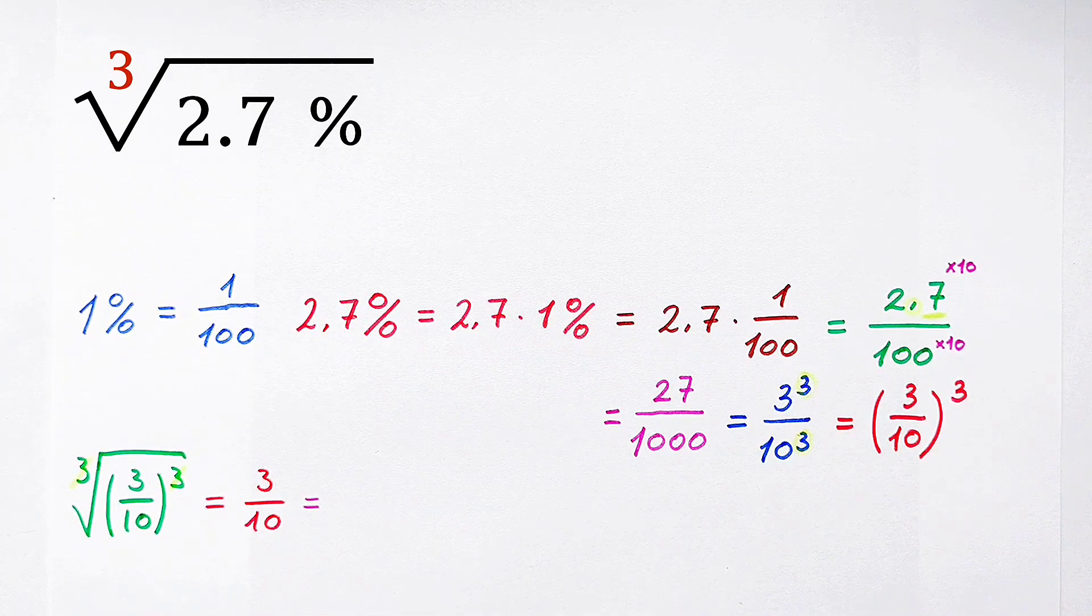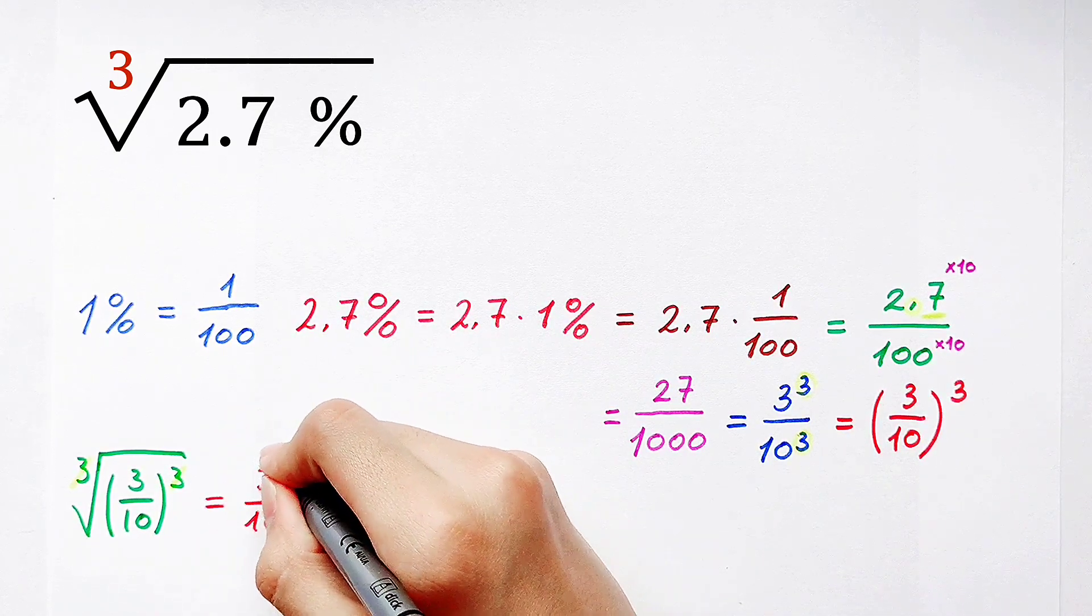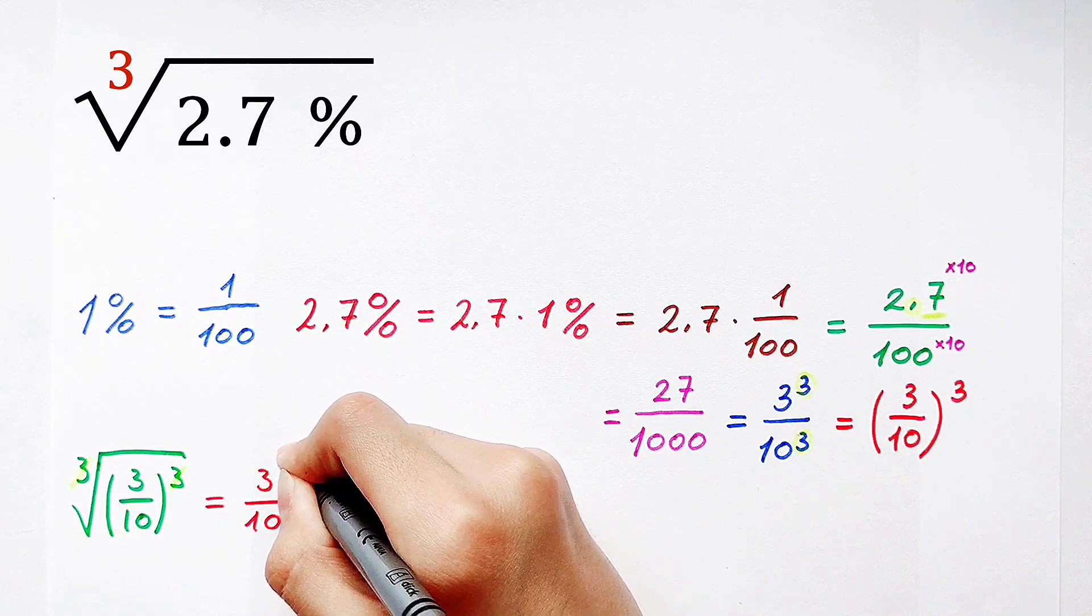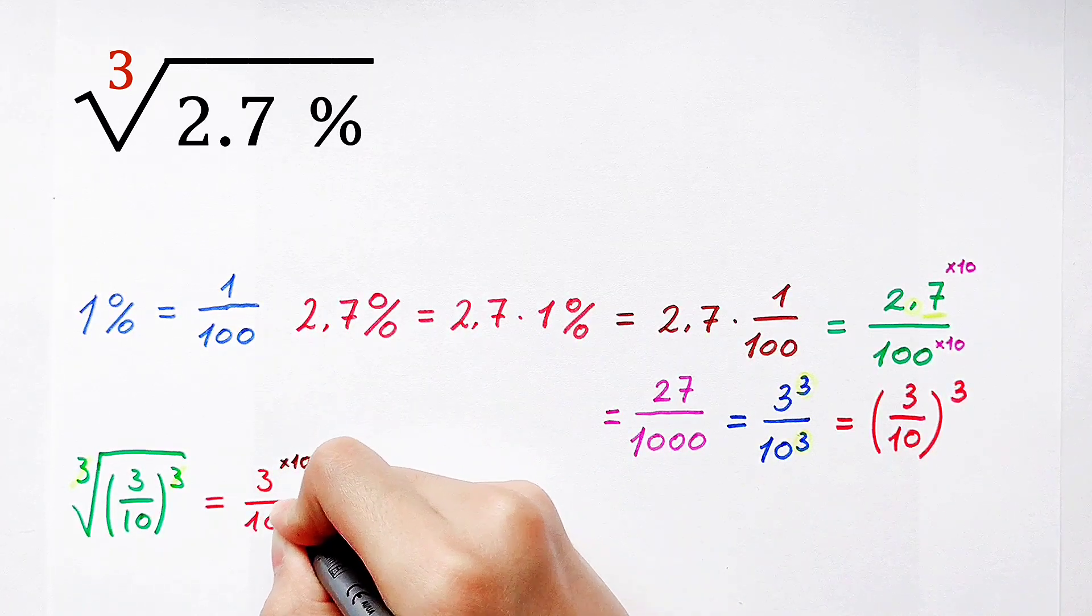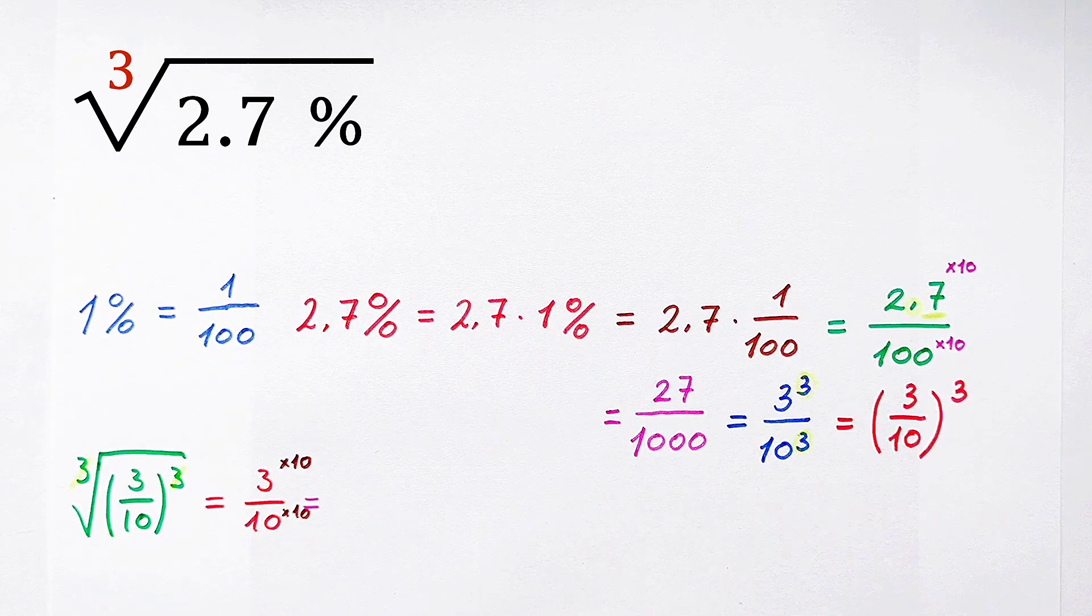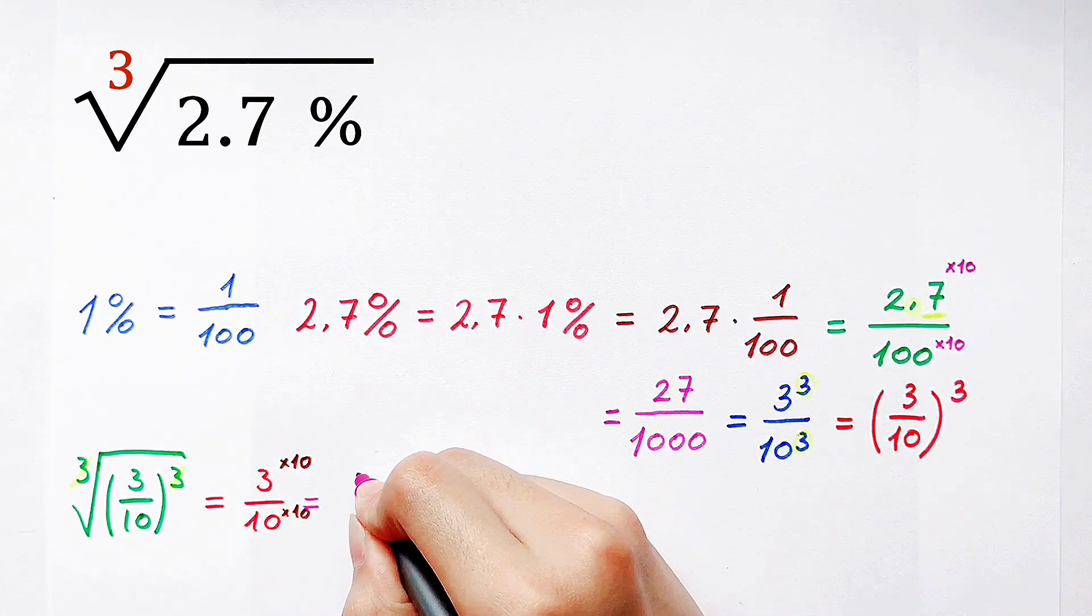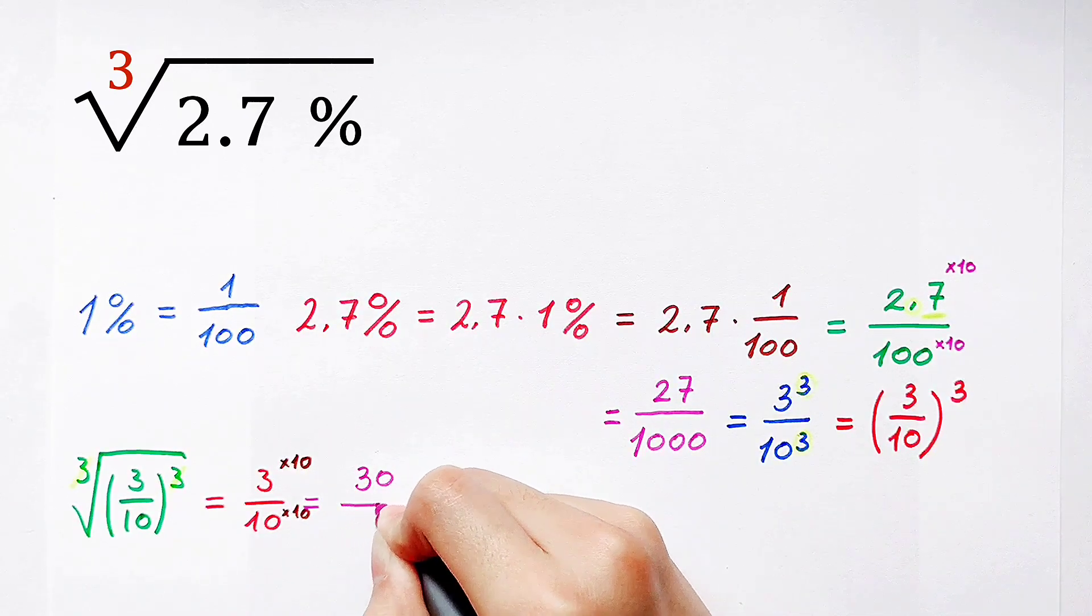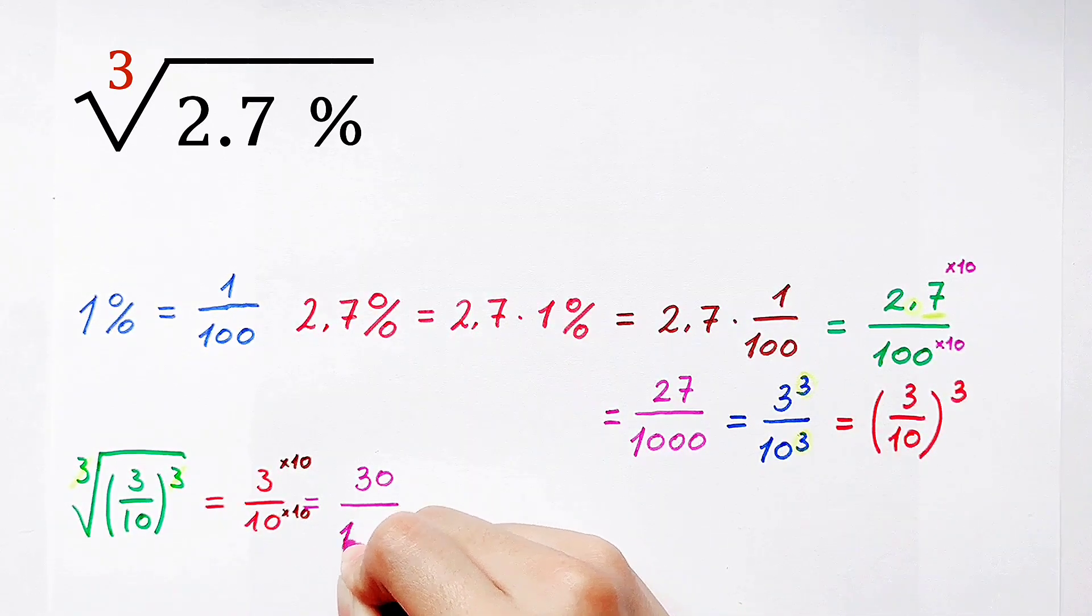So now we multiply by 10 on the denominator and also on the numerator. So the numerator becomes 3 times 10 is 30, and the denominator is 10 times 10 is 100. 30 divided by 100.